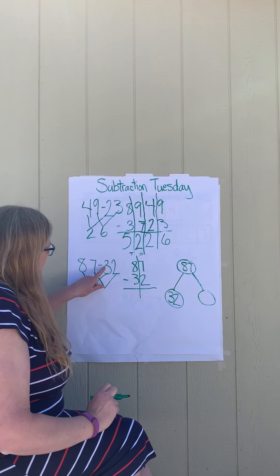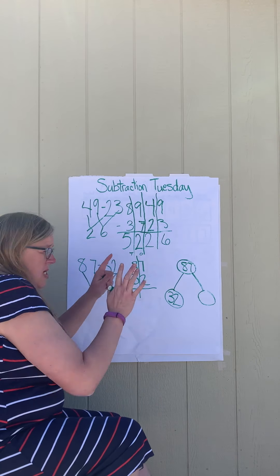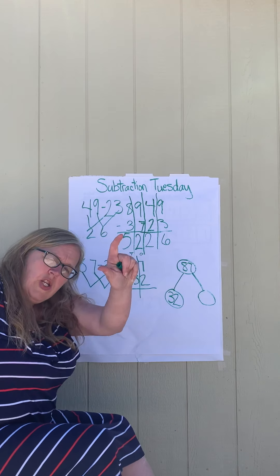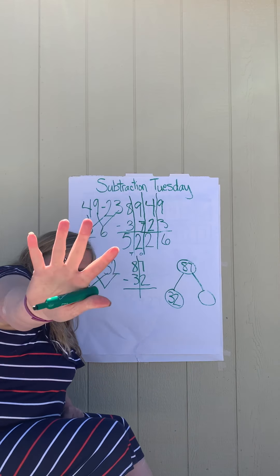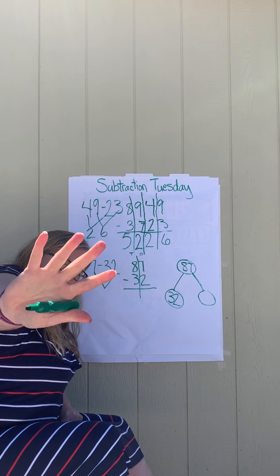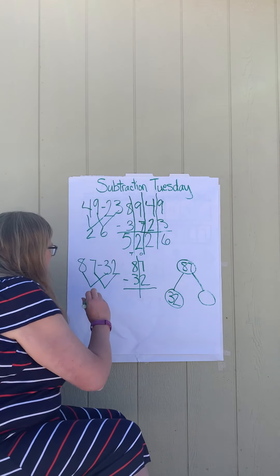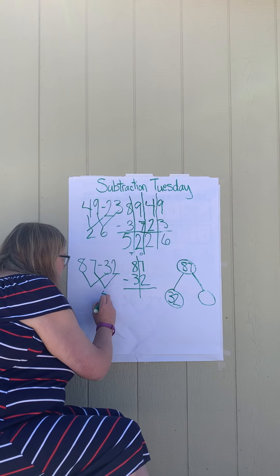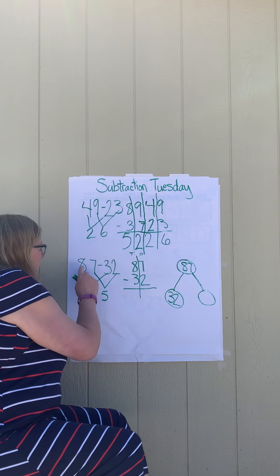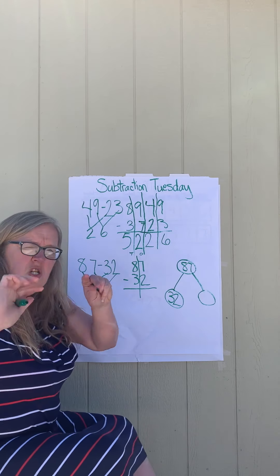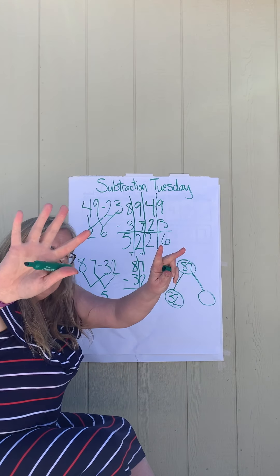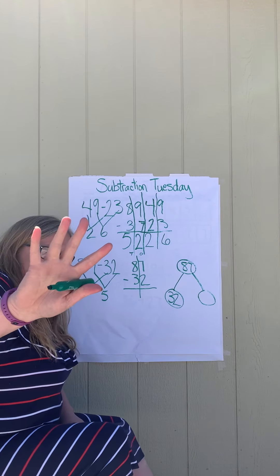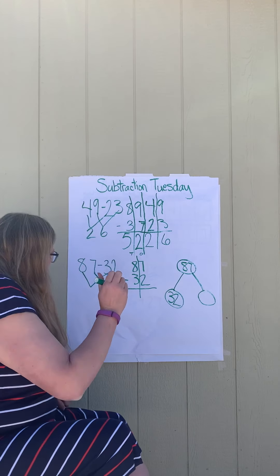Let's do one at a time. Seven minus two — seven, take away two, that leaves five. Eight take away three leaves five.